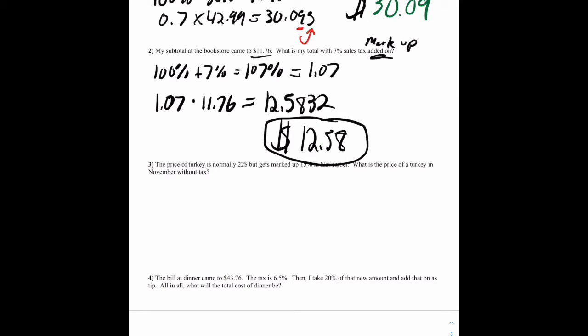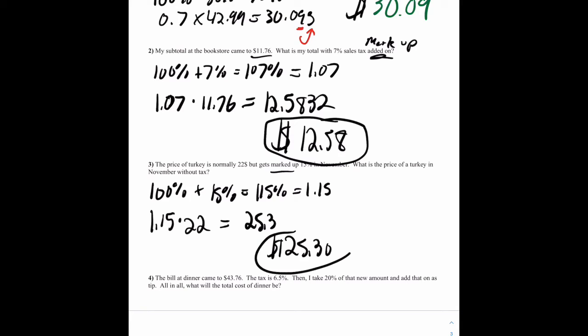All right, number three, the price of turkey is normally $22, but marked up 15% in November. Markup literally means markup. You know, a store would do that because in November, think about it. People want turkey. So if stores raise their prices by 15%, people are probably still going to buy it, and the stores can get more cash. So let's find the price of this turkey without tax here, just after the markup. So we have 100%, add on the 15%. That's going to equal 115%. Change that to a decimal as 1.15. We do 1.15 times our 22, and that will equal 25.3. That's our final answer there.